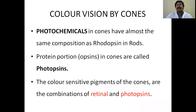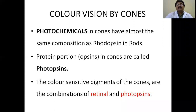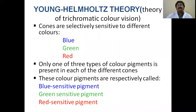The photopigment of the cones is called photopsin; the photopigment of the rods is called rhodopsin. The protein portion of the cones is called photopsin and the protein portion of the rods is called opsin. When rhodopsin is activated, it splits into 11-cis retinal and opsin. The color-sensitive pigments of the cones are combinations of retinal with photopsins — erythrolabe, cyanolabe, and chlorolabe.